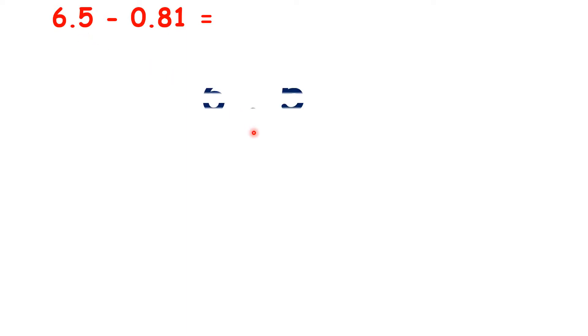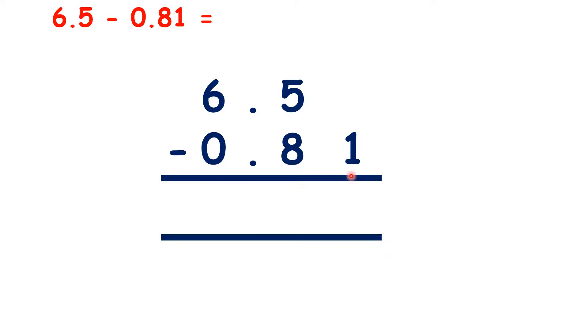Now let's solve 6.5 minus 0.81. So our decimal points are lined up, which means all our other place values are also lined up. Now we can write a 0 in this empty place value column, because in the number 6.5 we have exactly 6 units, exactly 5 tenths, and no extra hundredths. We need to remember to write the decimal point in our answer.